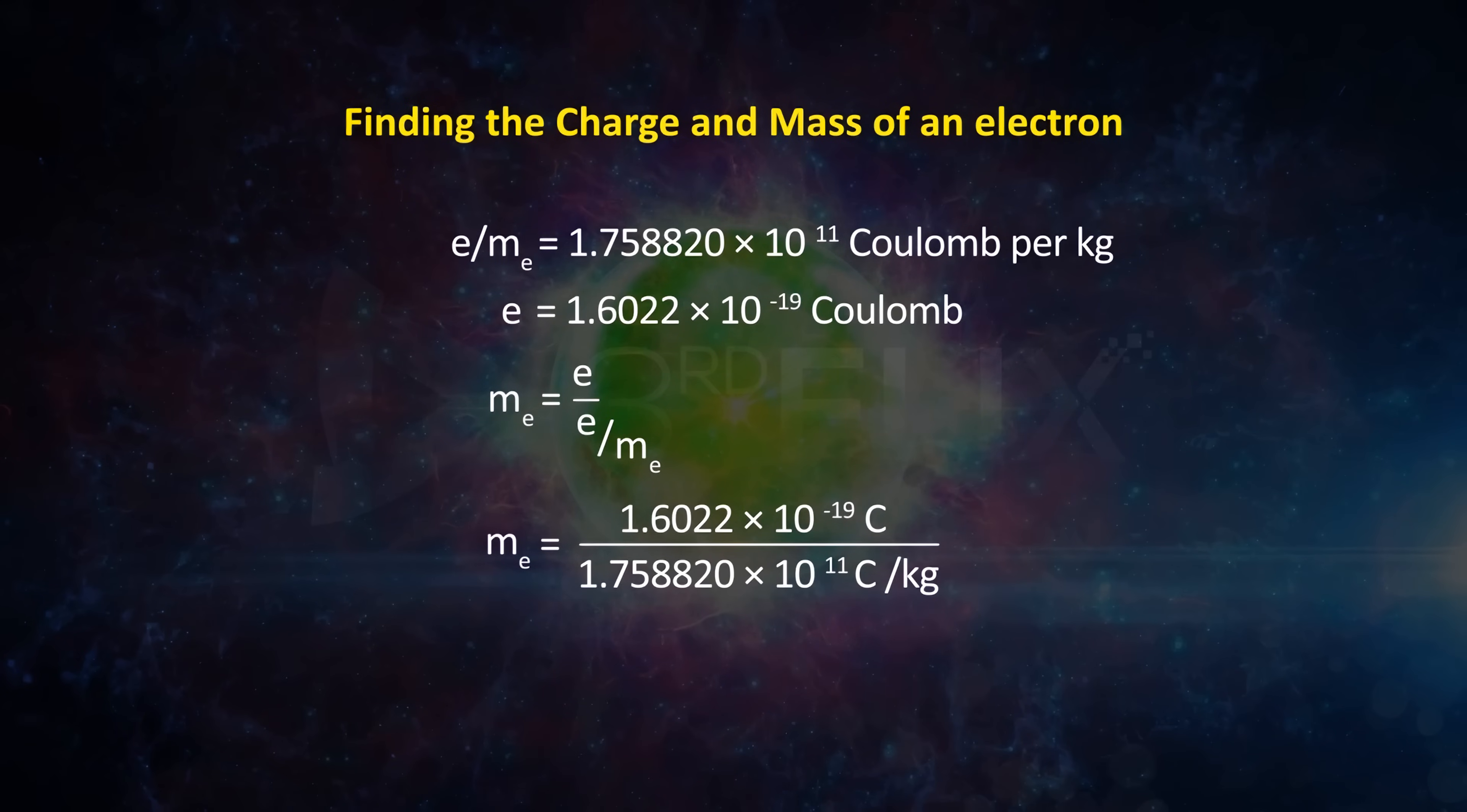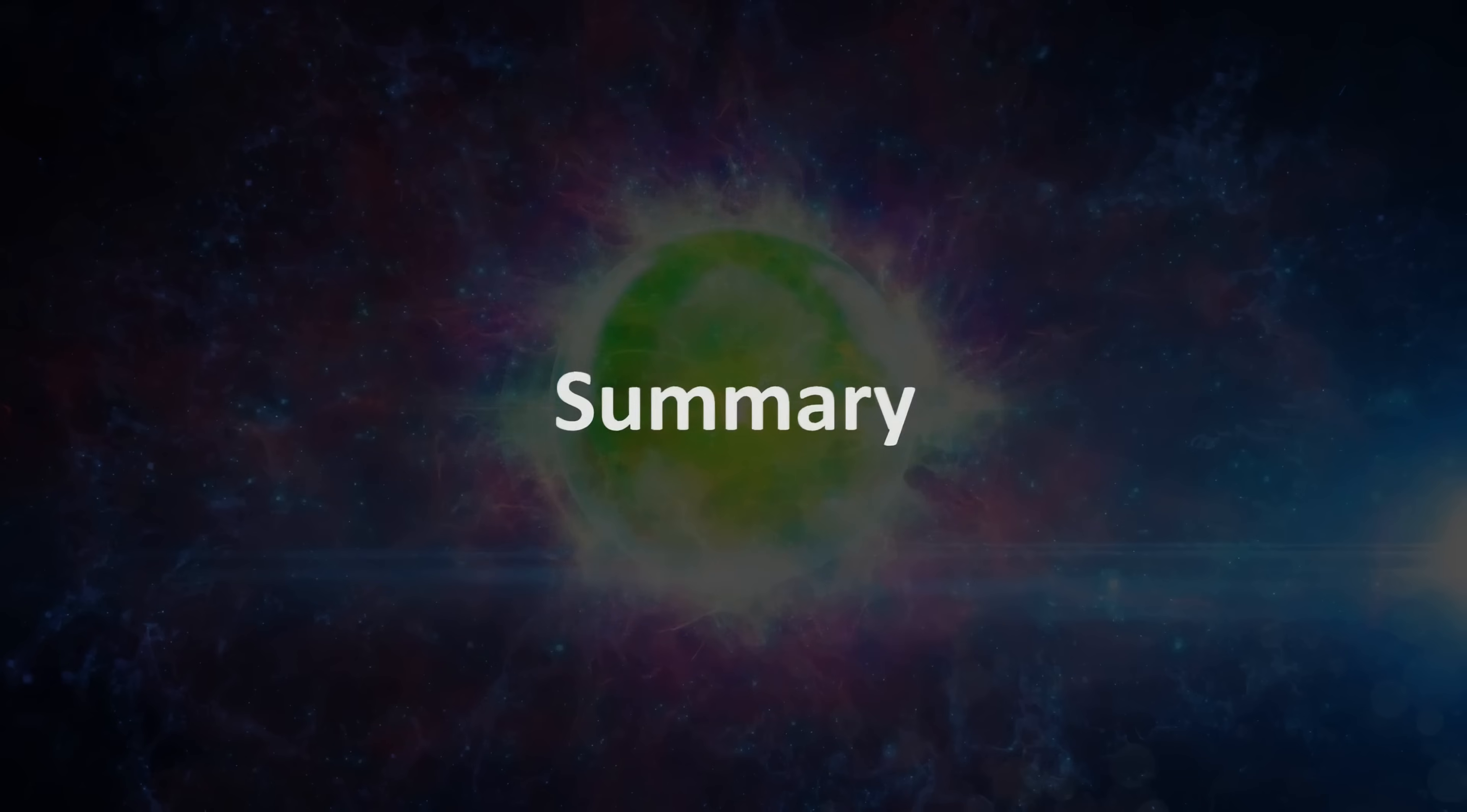This results in the value of mass as 9.1094 times 10 to the power minus 31 kg. Summary: The charge of an electron is 1.6022 times 10 to the power minus 19 coulomb. The mass of an electron is 9.1094 times 10 to the power minus 31 kg.